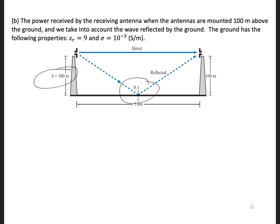And the ground has the following properties: epsilon r is 9, and sigma is 10 to the minus 3 Siemens per meter.